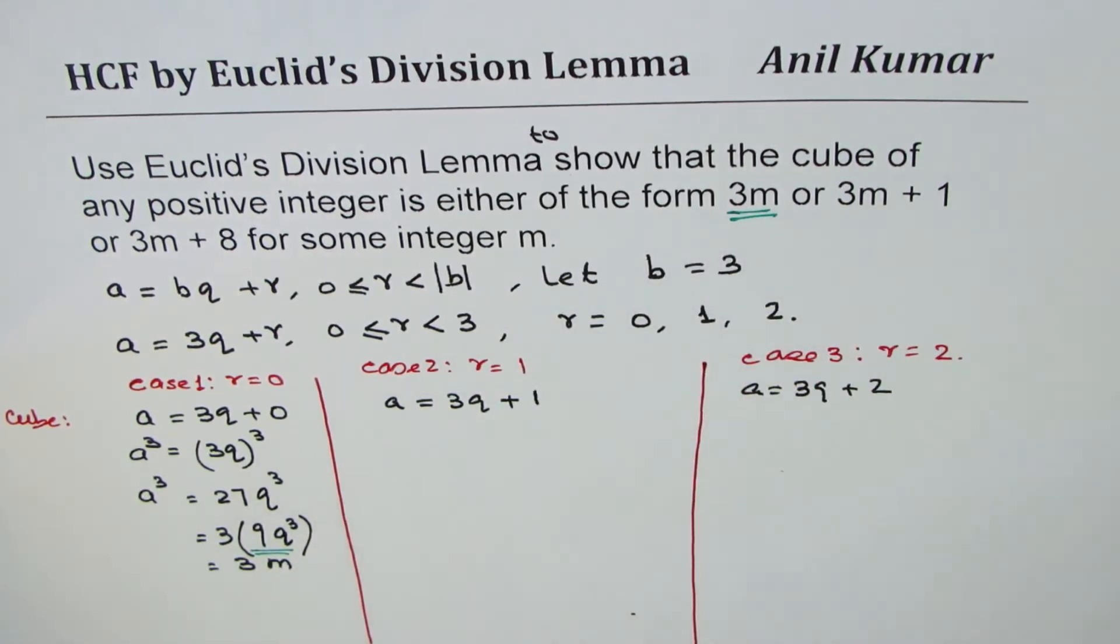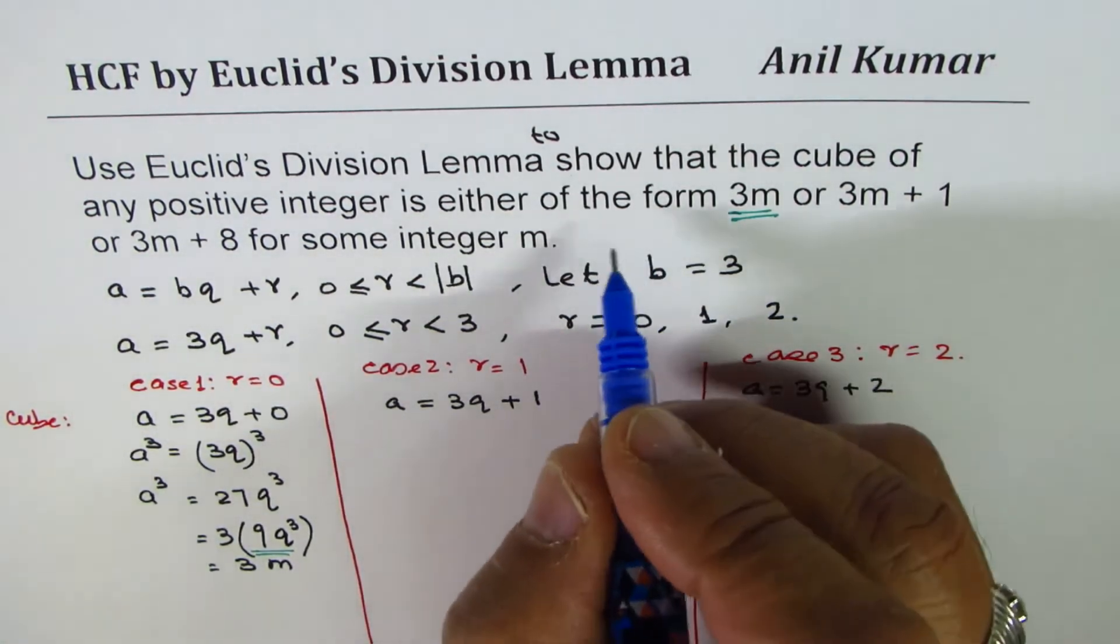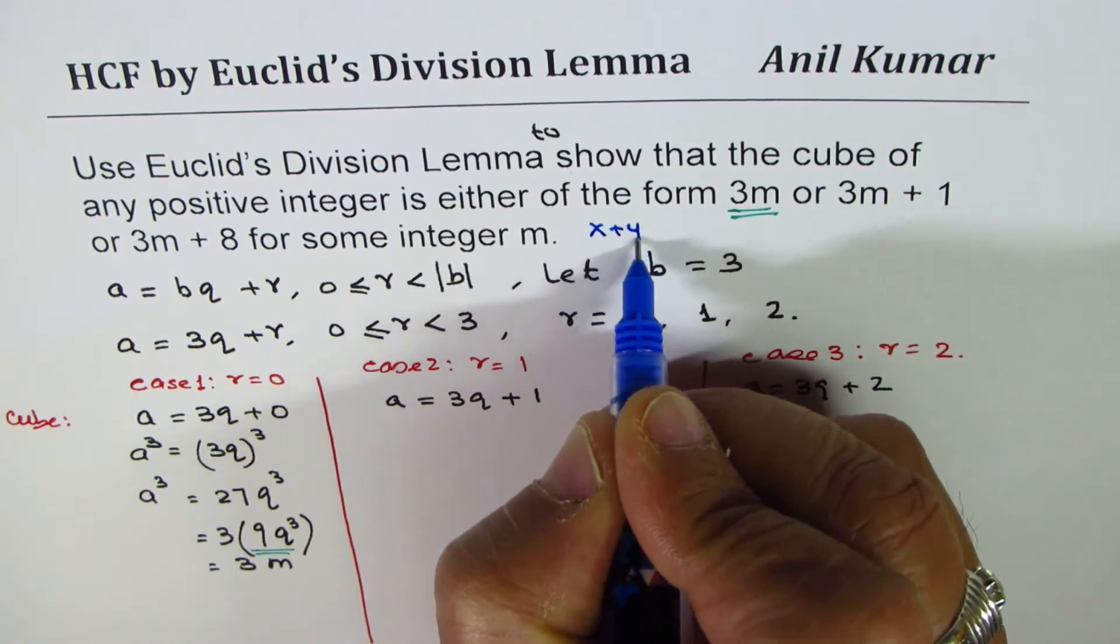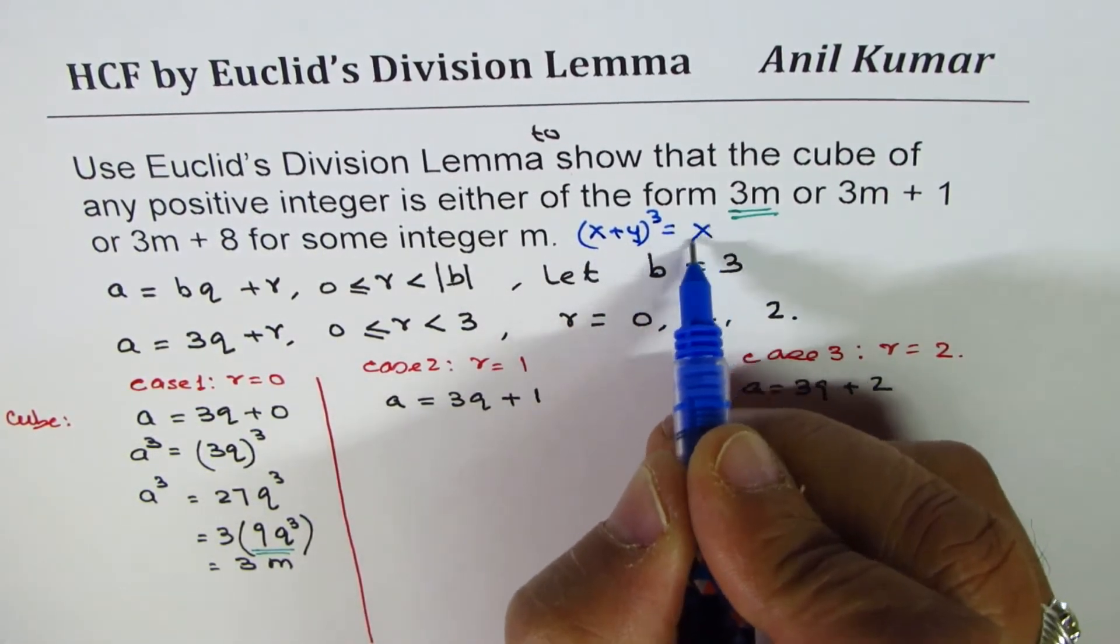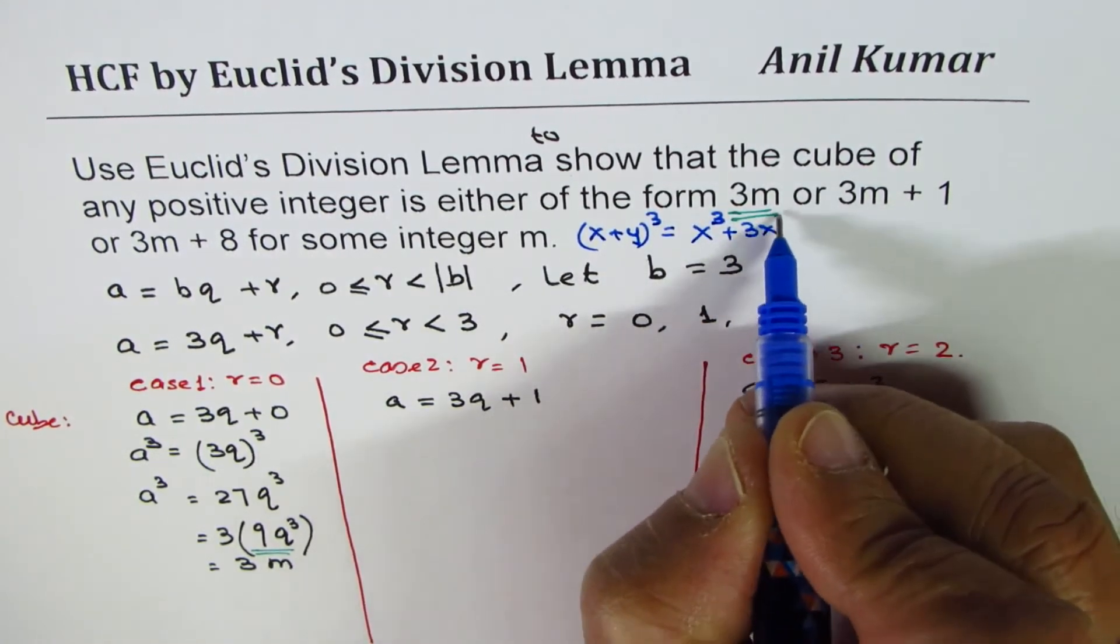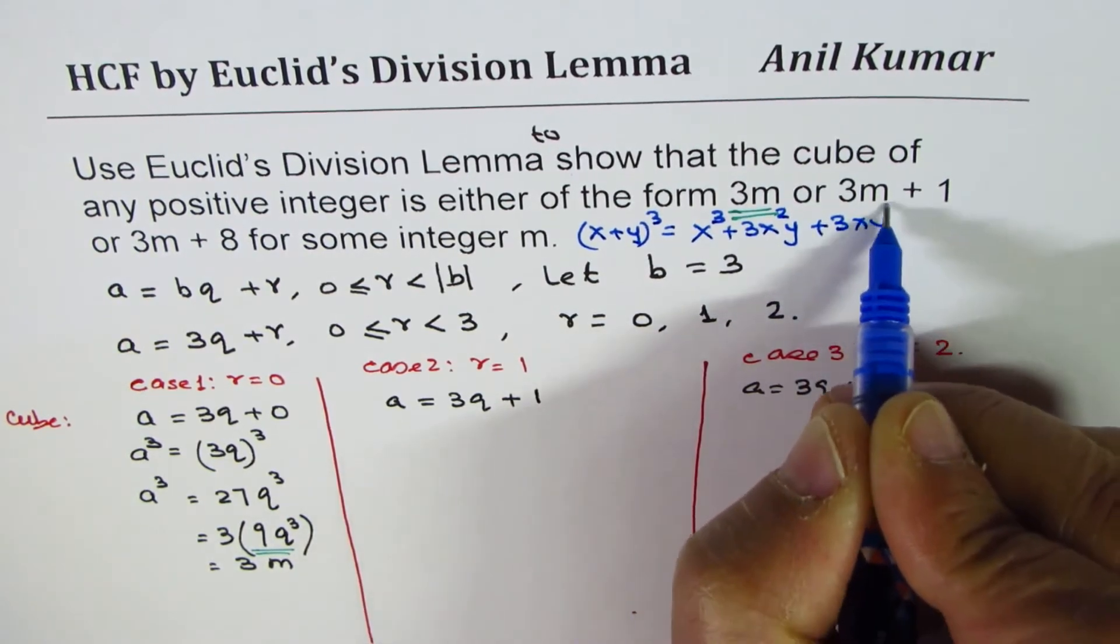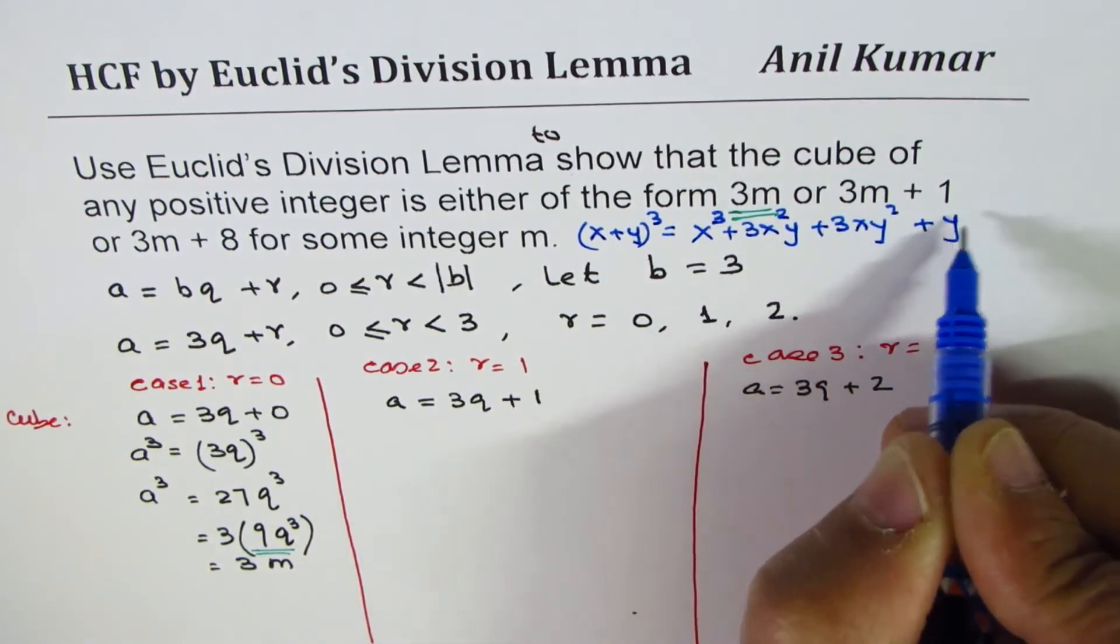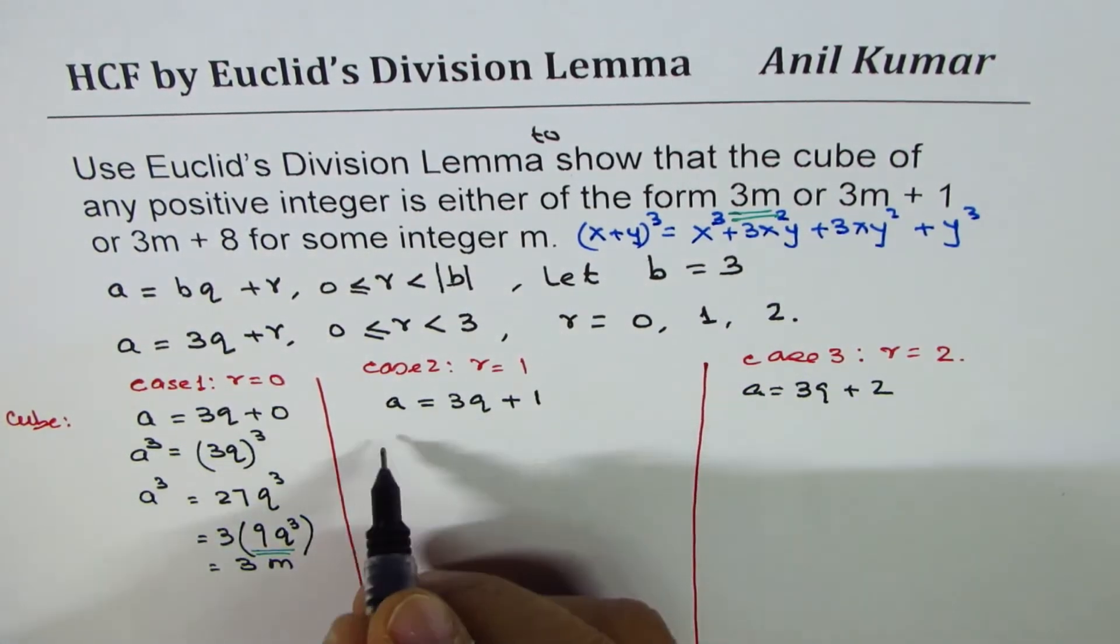Let's do the next part. Well, you might remember, I should write down. If I have X plus Y whole cube, it is equal to X cube plus 3X square Y plus 3XY square plus Y cube. We'll use this formula. And that's why I've given you here.